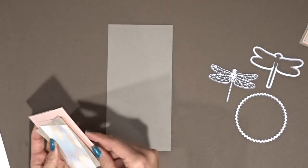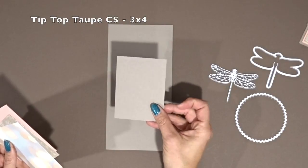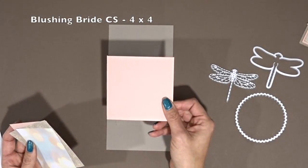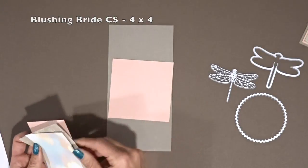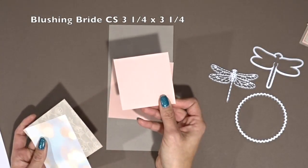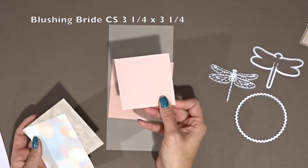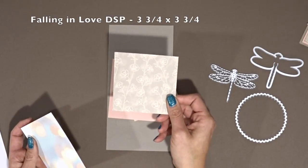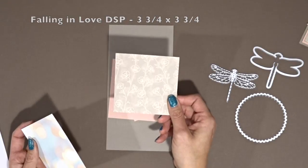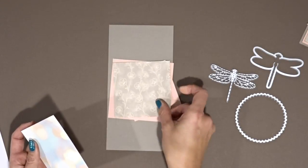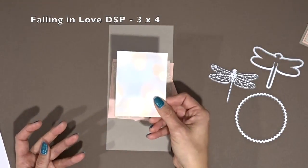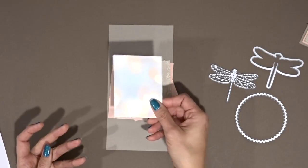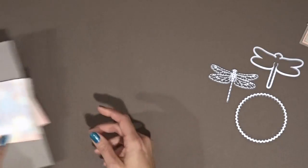For paper you're going to need a four and a quarter by eight and a half tip top taupe, a three by four approximately for your dragonfly, a four by four blushing bride, three and a quarter by three and a quarter for the scallop circle, three and three quarters by three and three quarters falling in love designer series paper, and three by four approximately for the under part of the dragonfly. So let's set that aside here and I'm going to grab out my big shot. We're going to get our cutting done first.